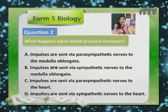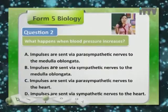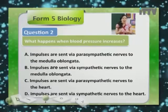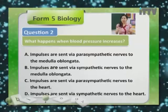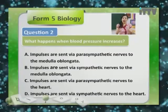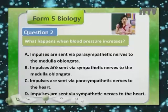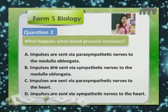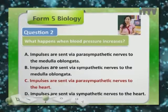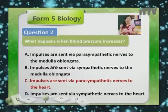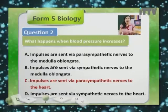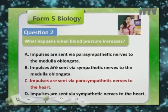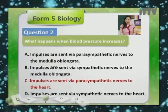For homeostasis, when blood pressure increases, it has to decrease back. This can only be achieved when the heart doesn't contract so hard. The answer is C — when impulses are sent via parasympathetic nerves back to the heart, the heart will relax and will not contract so hard.